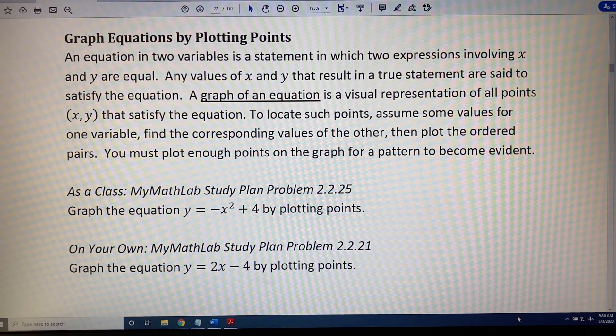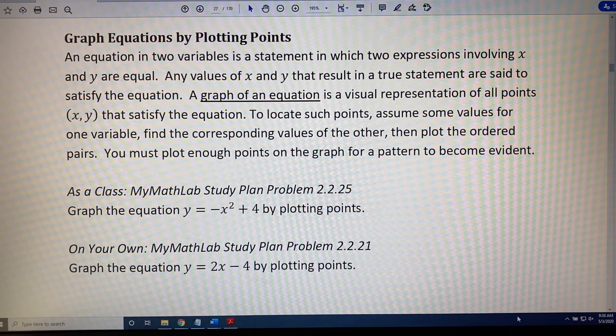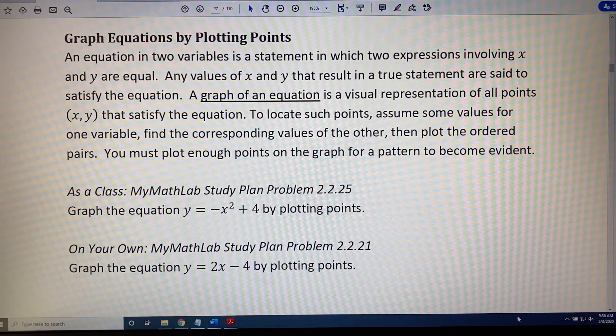A graph of an equation is a visual representation of all points that satisfy the equation. To locate such points, assume some values for one variable, find the corresponding values of the other, then plot the ordered pairs. You must plot enough points on the graph for a pattern to become evident.